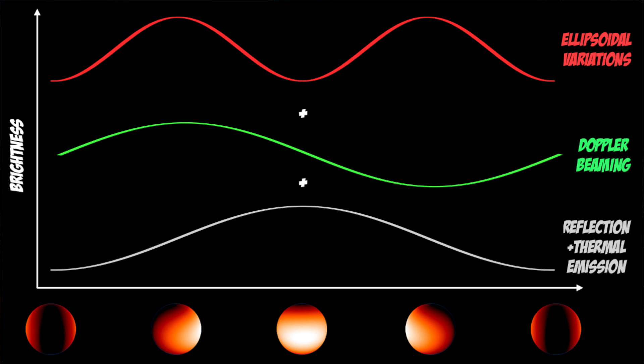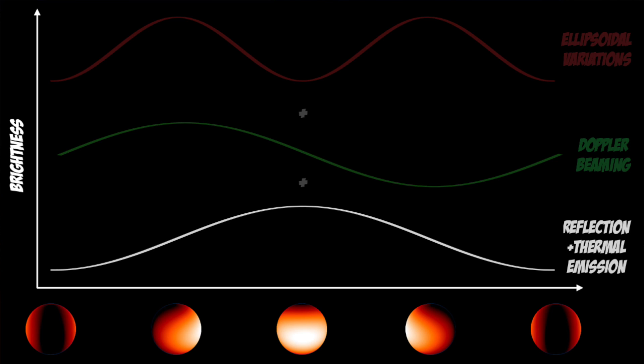If a planet is massive enough to produce these effects, ellipsoidal variations and Doppler beaming, a planet doesn't even need to transit in order for us to detect it. If the planet is not too massive, these effects won't be detectable and all you may be able to see is the phase curve of the planet itself.